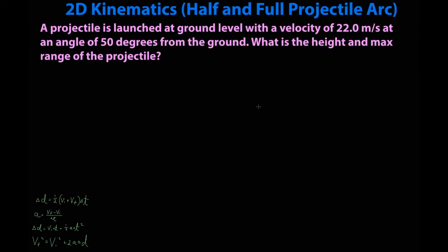A projectile is launched at ground level with a velocity of 22 meters per second at an angle of 50 degrees from the ground. What is the height and max range of the projectile?